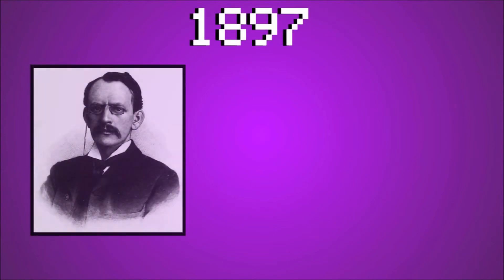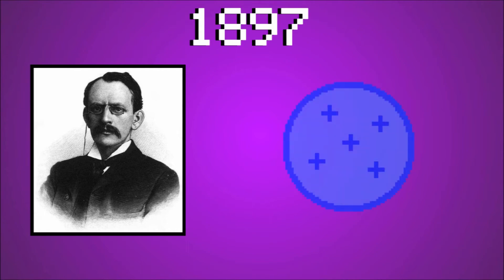The electron, however, wasn't discovered until 1897 when a man named J.J. Thompson discovered them and proposed an atomic model resembling plum pudding, with a positively charged dough and negatively charged raisins sprinkled throughout. While this did explain some of the electrical properties of atoms, it didn't represent the positive charges as separate particles.